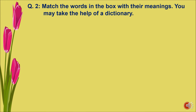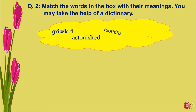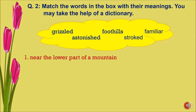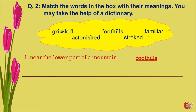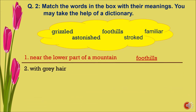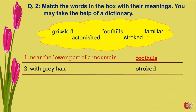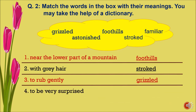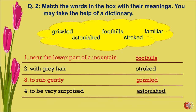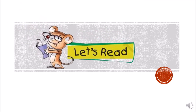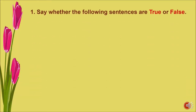The words are: grizzle, astonish, foothills, stroke, and familiar. Number one: near the lower part of a mountain means foothills. Number two: with gray hair means grizzle. Number three: to rub gently means stroke. Number four: to be very surprised means astonish. Number five: known to you means familiar.